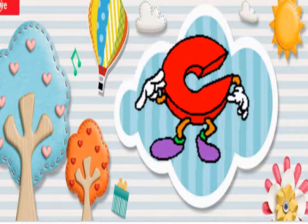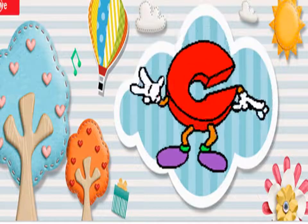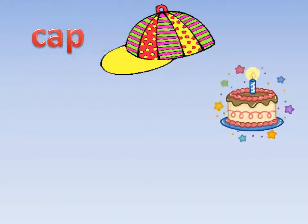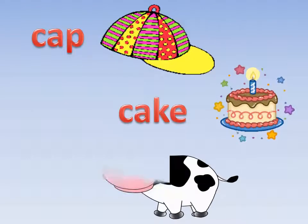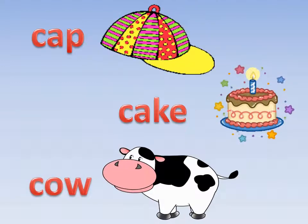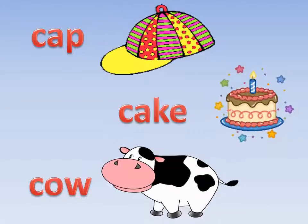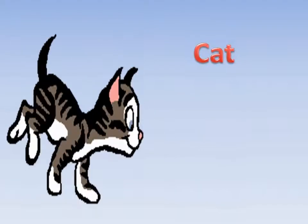Letter C. Sound of letter C. Words that begin with letter C. Picture one: cab. Picture two: cake — birthday cake. Picture three: cow. It gives us milk. Cow.